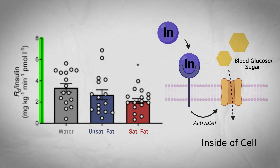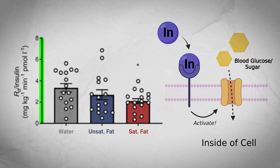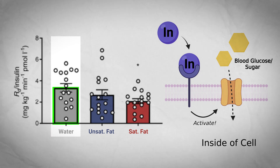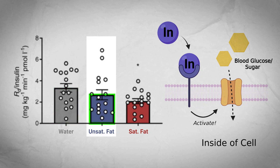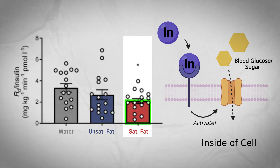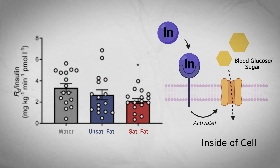In the first study, the one that only fed one drink with high concentrations of each respective fat — high saturated fat (palmitate specifically) or high monounsaturated fat (oleate specifically) — there was a reduced ability of individuals to remove blood sugar per unit of insulin in the saturated fat fed individuals. The vertical axis shows glucose disposal per unit of insulin, so the higher it is, the better the insulin sensitivity. The gray bar is water only, the blue bar is unsaturated fat, and the red bar is saturated fat. The individual dots show the spread of results for all people measured.